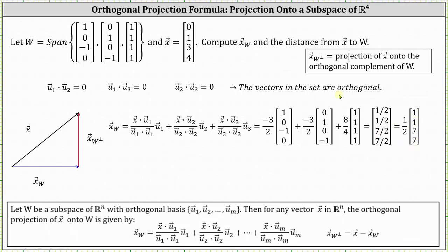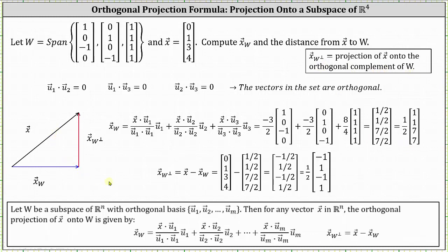Now we need to find the projection of vector x onto the orthogonal complement of W, and we can do this by computing vector x minus vector x sub W. This gives us [0, 1, 3, 4] minus [1/2, 1/2, 7/2, 7/2], which equals the vector [−1/2, 1/2, −1/2, 1/2], or we can factor out one half.